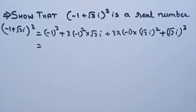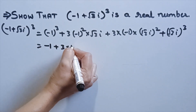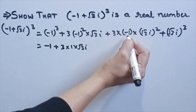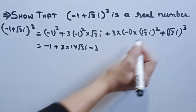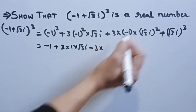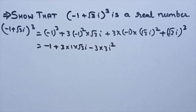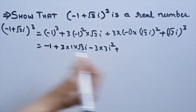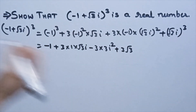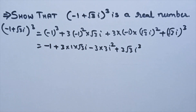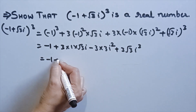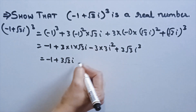(-1)³ = -1 times -1 times -1 = -1. Then 3 times (-1)² times √3i gives 3 times 1 times √3i = 3√3i. Then 3 times (-1) times (√3i)² = 3 times (-1) times 3i² = -9i². Plus (√3)³ = 3√3, so the last term becomes 3√3 times (-i) since i³ = -i.